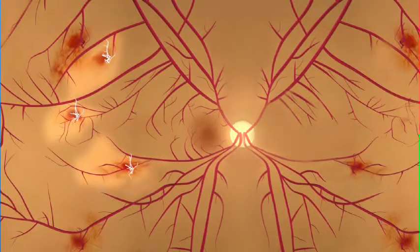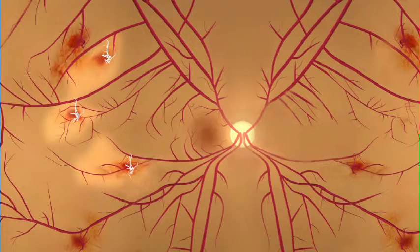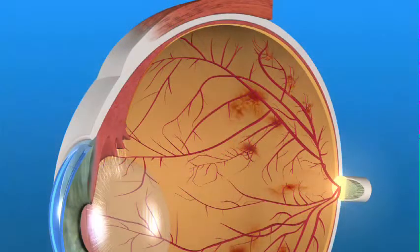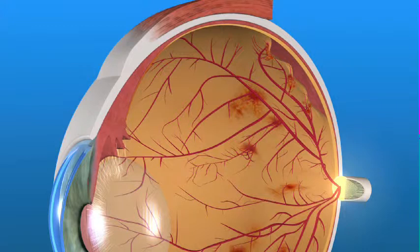The retina responds to this problem by trying to grow new blood vessels. However, these new abnormal vessels do not provide proper blood flow. They can also bleed as well as lead to scar tissue, which may cause the retina to wrinkle or even detach. If similar vessels grow abnormally in the front of the eye, they can block the drainage channels of the eye and cause high pressure and possibly glaucoma.